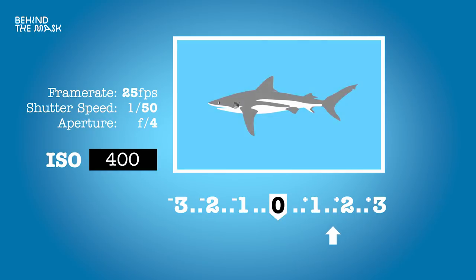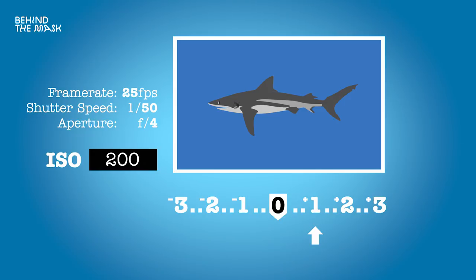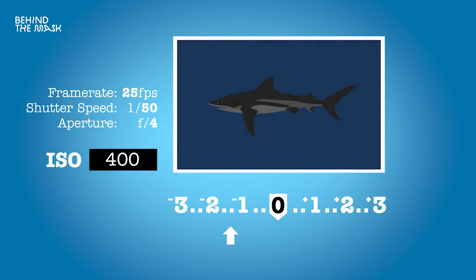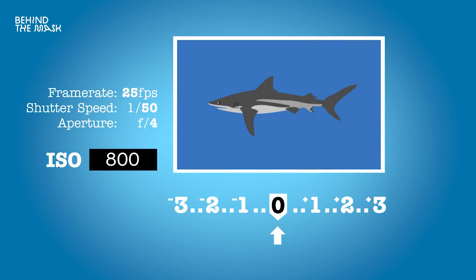With the aperture and shutter speed dialed in, I check my exposure. If I'm overexposed I bring down the ISO, and if I'm underexposed I raise it. As mentioned, with my Panasonic GH5 I don't go beyond 1600 ISO because I'm going to introduce too much noise and grain. There are some situations where I will go beyond 1600 ISO just to get the specific shot.